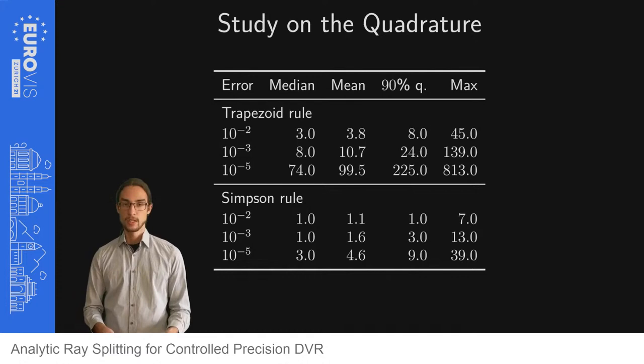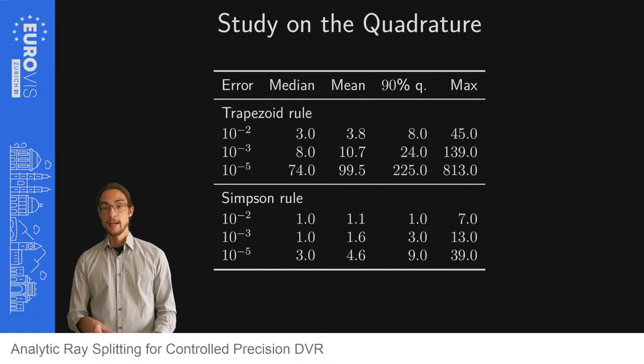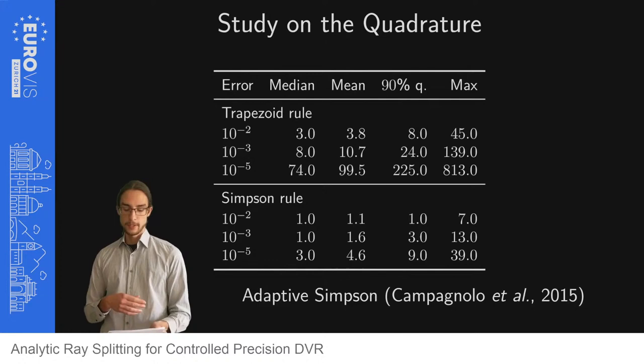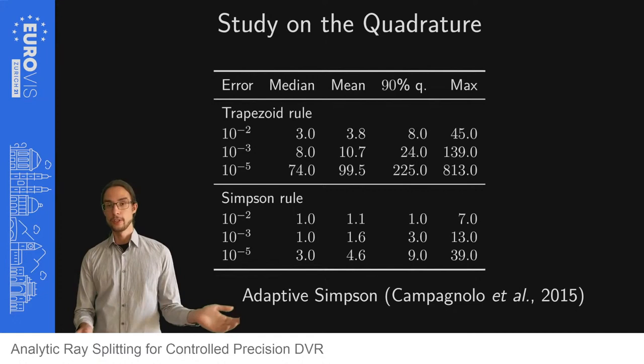However, computing those error bounds is quite costly. As an alternative, we can use the adaptive Simpson scheme as proposed by Campagnolo et al. in 2015. The timings shown earlier use this adaptive Simpson scheme.